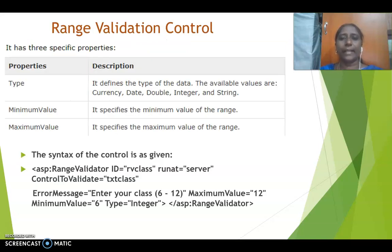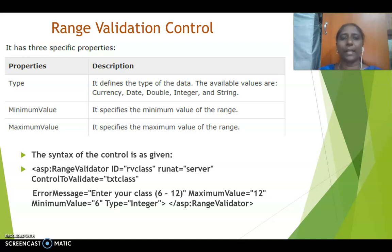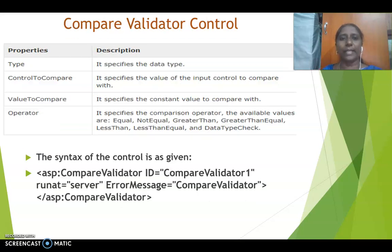The second one is range validator. Here, we will be dealing with an error message and we will be fixing a minimum value and a maximum value. This range validation control acts when the input violates the minimum or maximum value. You will be giving three properties: minimum value, maximum value, and the error message. For example, if you want to validate age for eligibility to vote, it should be greater than 18, so you can give the minimum value as 18 and the maximum value as 100 or 200.